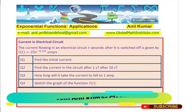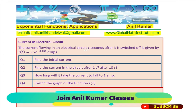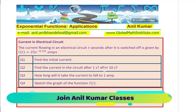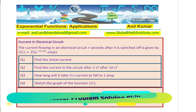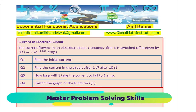The question here is: the current flowing in an electrical circuit T seconds after it is switched off is given by I(T) = 25e^(−0.15T) amperes. Based on this, there are 4 questions: find the initial current; find the current after 1 second and after 10 seconds; how long will it take the current to fall to 1 ampere; and sketch the graph of the function I(T). It is a complete question to help review concepts on solving word problems related to exponential functions.